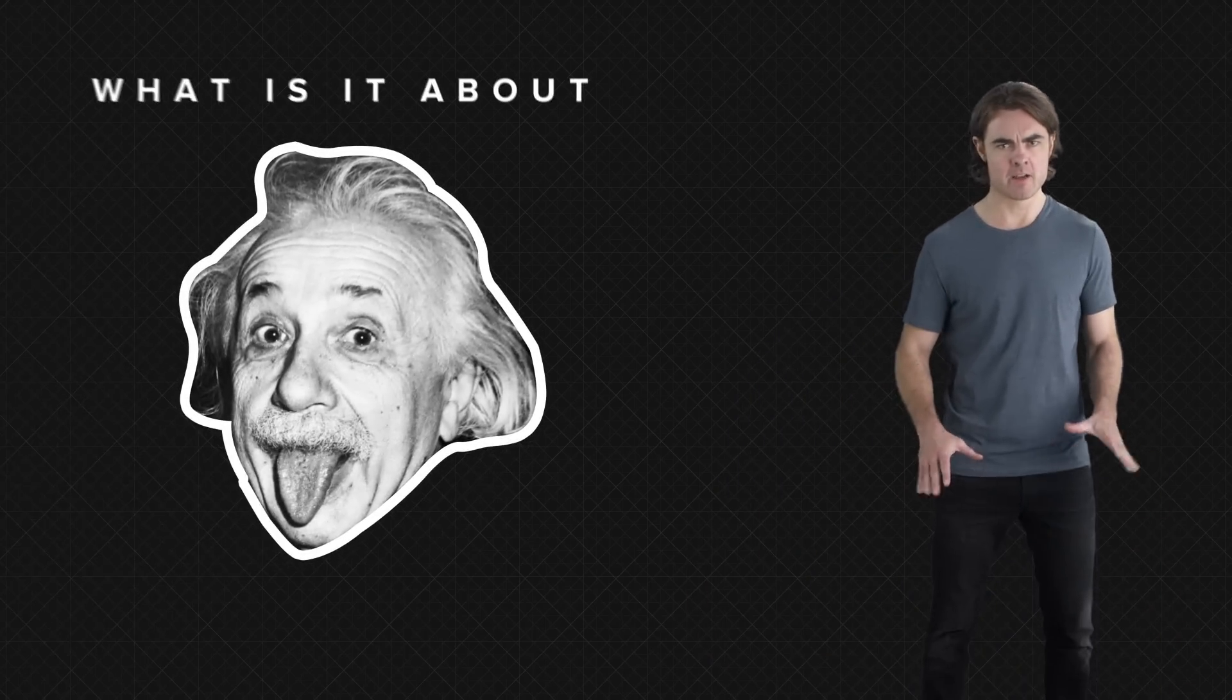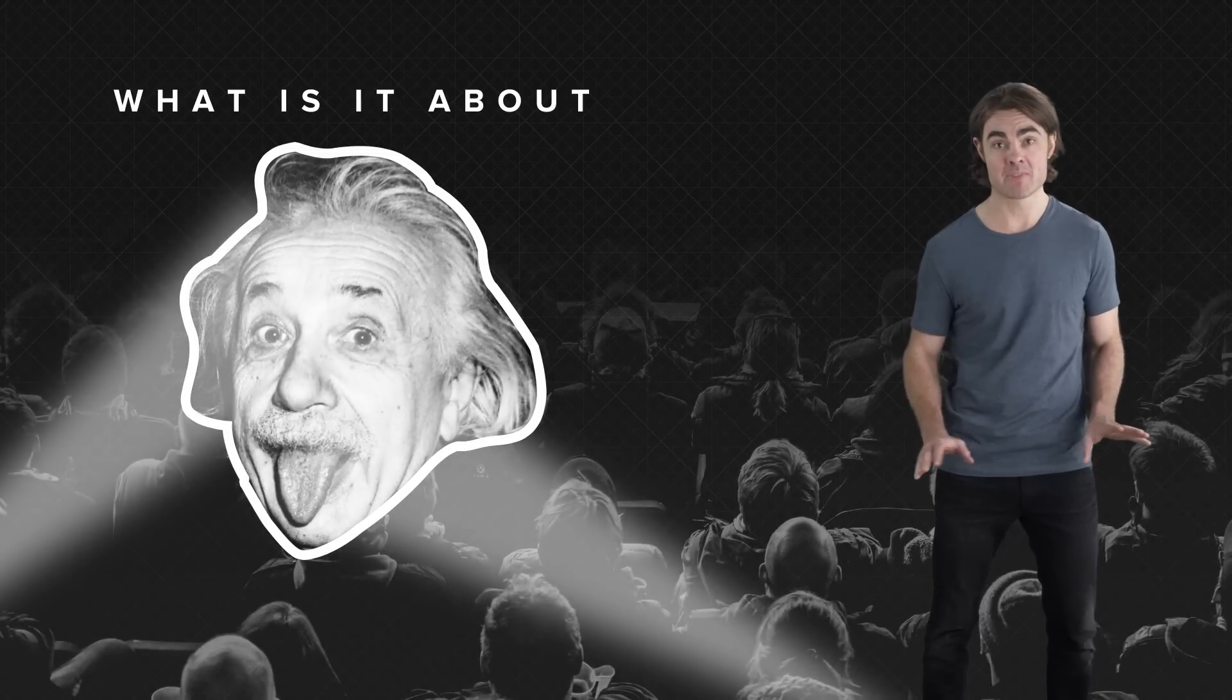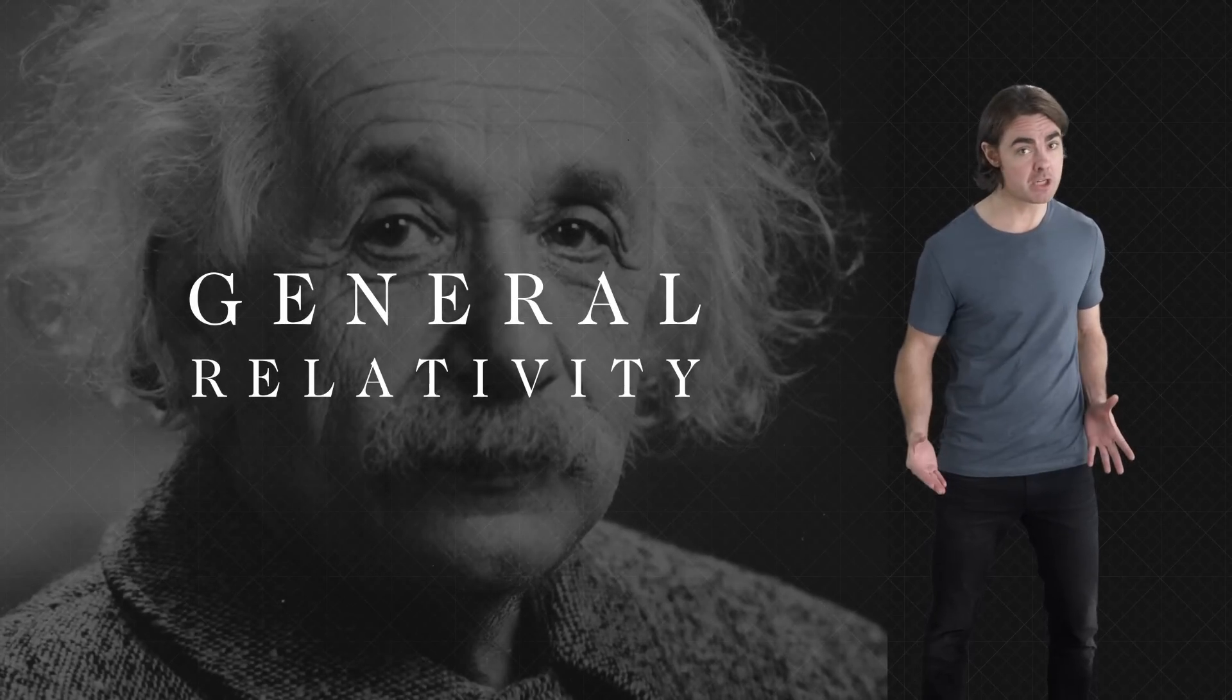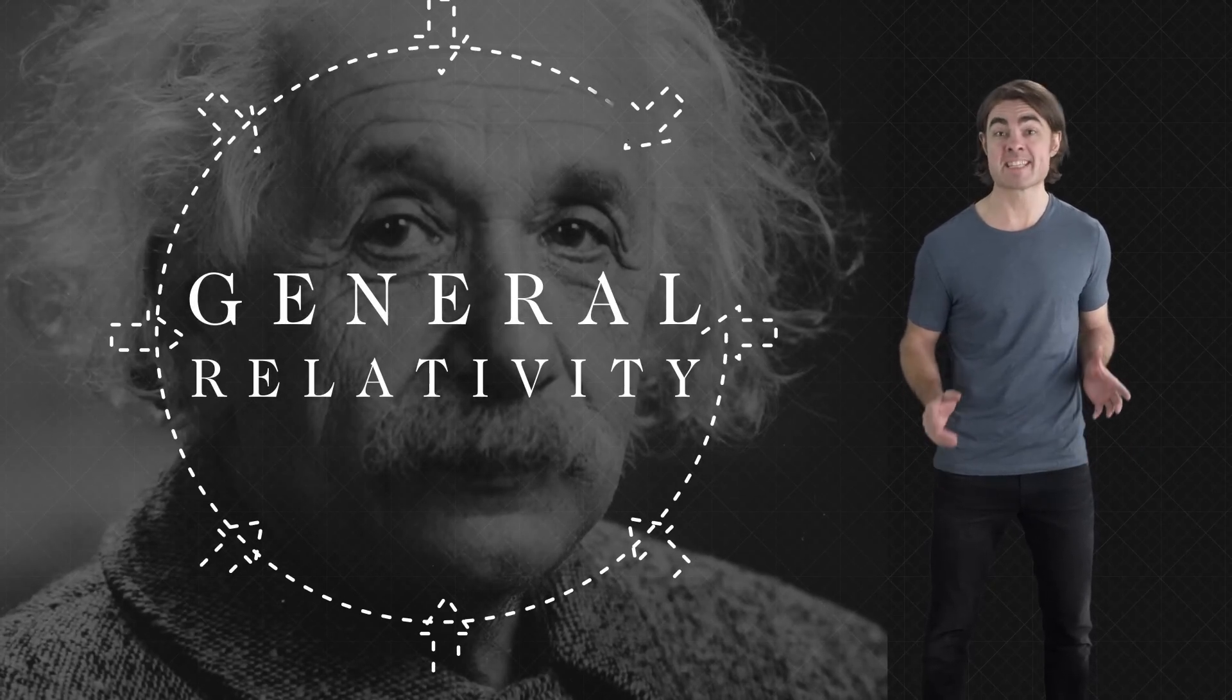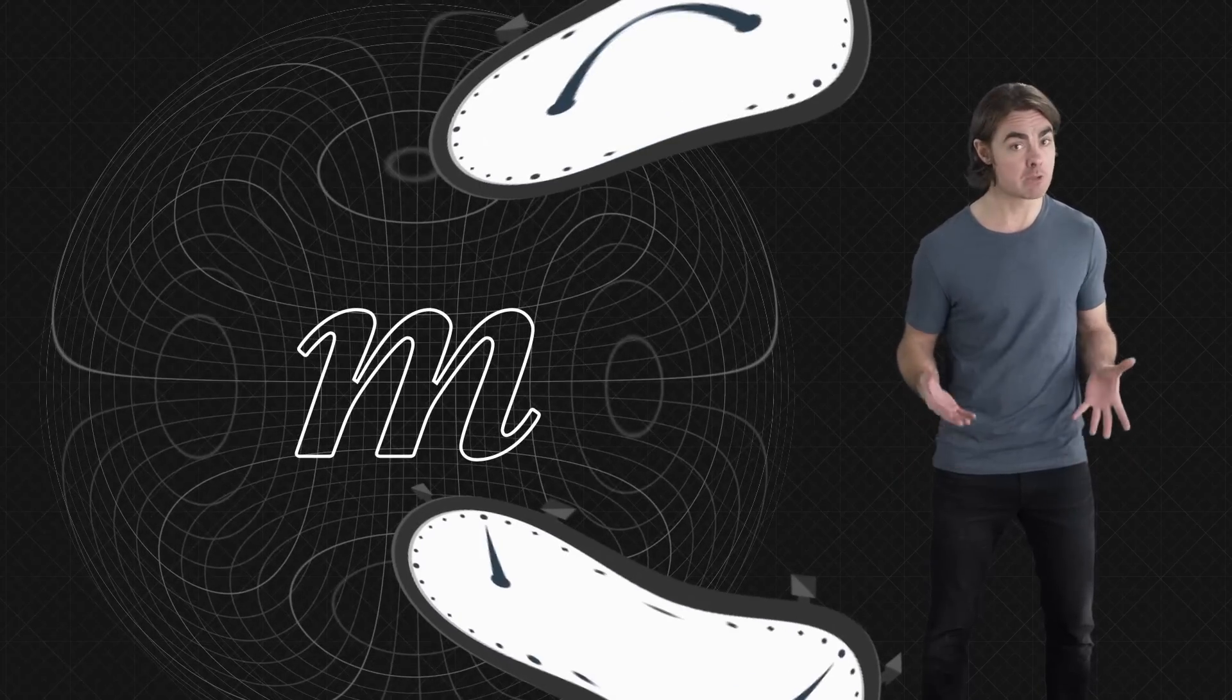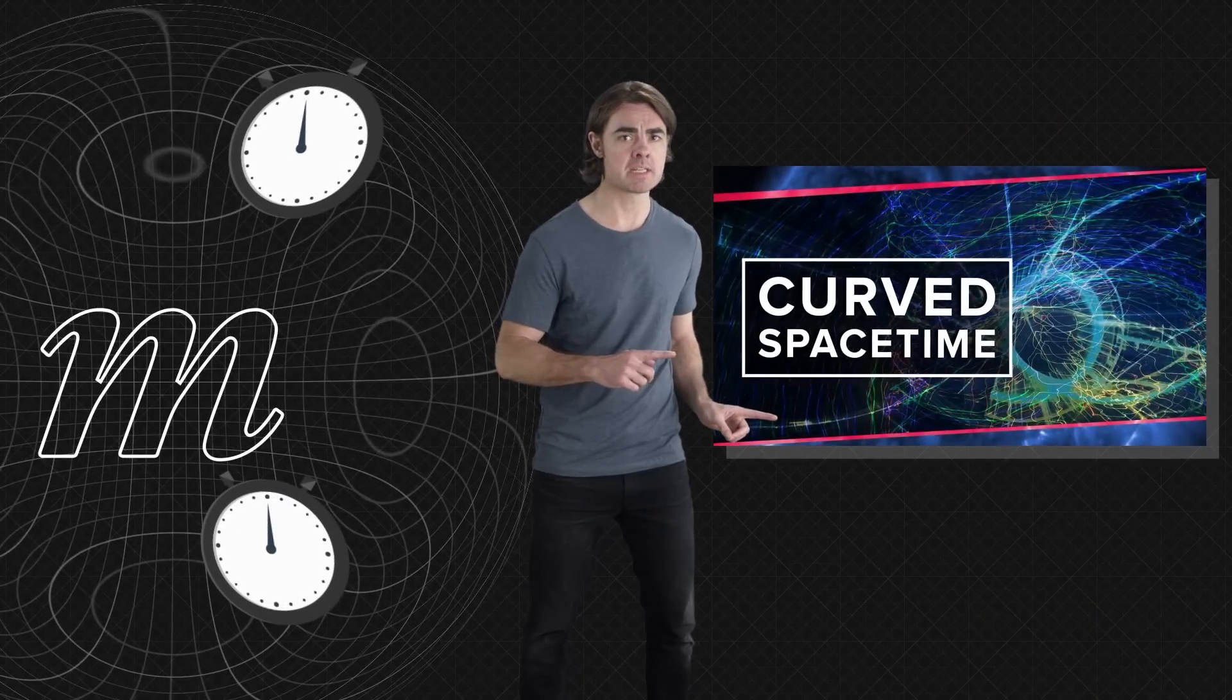What is it about Einstein? Why is he the most famous and best loved smart person ever? It has a lot to do with his revolutionary theory of general relativity, in which he showed us that the force of gravity is an illusion. Instead, mass warps the fabric of 4D spacetime, leading to what we see as gravitational motion. Check out this playlist for more details.